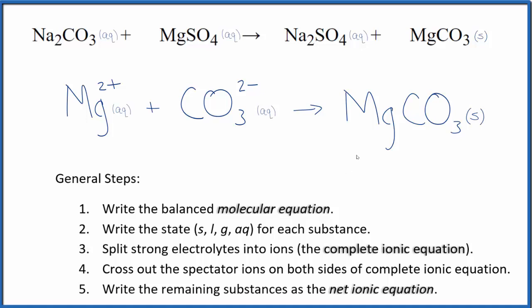So this is the balanced net ionic equation for Na2CO3 plus MgSO4. You'll note the atoms, they're balanced. And we have the same charge on each side. Two plus, two minus. That adds up to zero net charge of zero. In the products, this is neutral net charge of zero.